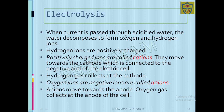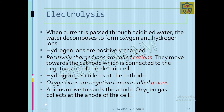When current is passed through acidified water, the water decomposes. H₂O decomposes into hydrogen and oxygen ions. Hydrogen ions are positively charged — they are cations — and move toward the cathode, which is connected to the negative end of the electric cell. So hydrogen gas collects at the cathode. Oxygen ions are negatively charged — they are anions — and move toward the anode, so oxygen gas collects at the anode.